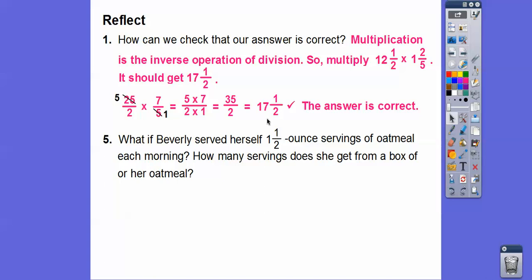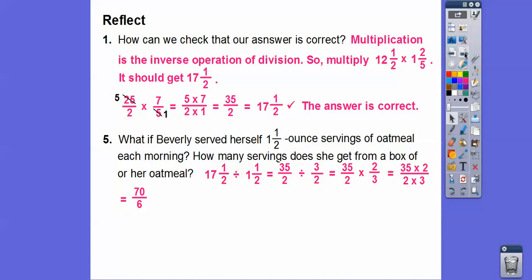What if Beverly's servings were one and a half ounce servings instead of one and two-fifths? How many servings does she get from the box? We take 17 and a half divided by one and a half. Converting to improper fractions and applying keep-change-flip: 35 over 2 divided by 3 over 2. We could cancel the 2s. So 6 goes into 70 eleven times — 6 times 11 is 66, with 4 left over — giving us 11 and 4 sixths, which reduces to 11 and 2 thirds. Cancelling the 2s gives 35 thirds, which is also 11 and 2 thirds.